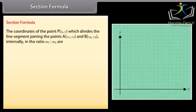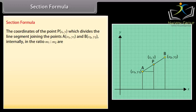Section formula. The coordinates of the point bxy which divides the line segment joining the points a, x1, y1 and b, x2, y2 internally in the ratio m1 is to m2 are m1 x2 plus m2 x1 by m1 plus m2, m1 y2 plus m2 y1 by m1 plus m2. Graphical representation is shown in the figure given below.